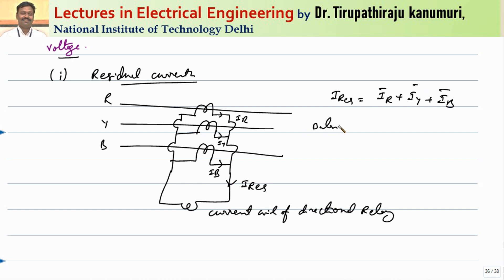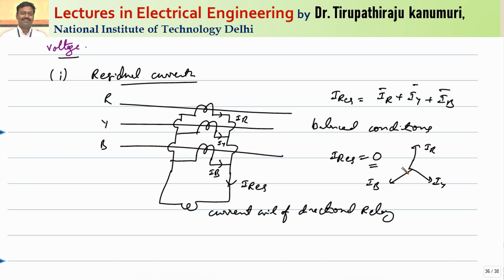Under balanced conditions, the values of IR, IY, and IB will have nearly the same magnitude. As they are displaced by 120 degrees, their sum will be equal to zero, so I-residual will be equal to zero. Even if there is a small unbalance, the residual current magnitude will be of lesser magnitude. We will make the current setting such that it will not operate for small values of unbalance, and we keep the setting according to the expected fault unbalance.